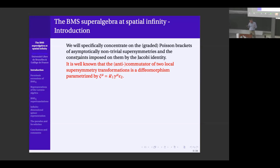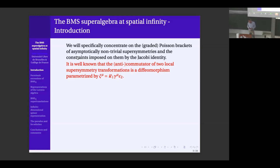The supercharges are the Hamiltonian generators of the local supersymmetries. Let me recall some background on supergravity: supergravity is invariant under diffeomorphisms and also under local supersymmetry transformations. If you compute the graded commutator — also known as anticommutator in that case — of two local supersymmetry transformations, you get a diffeomorphism.